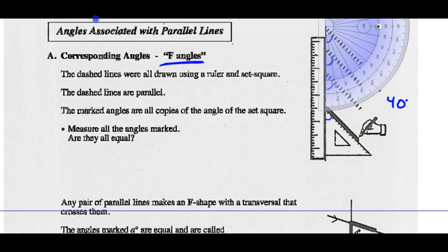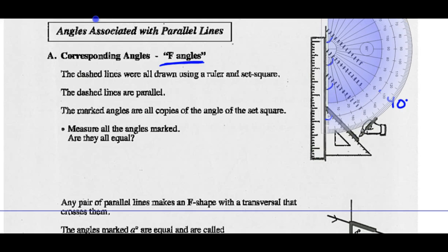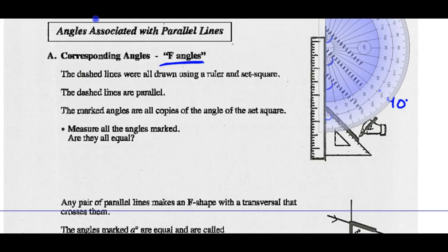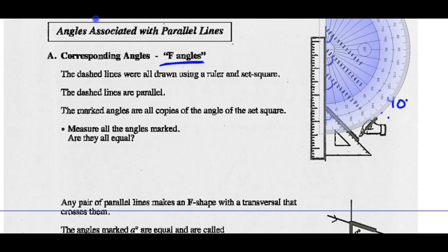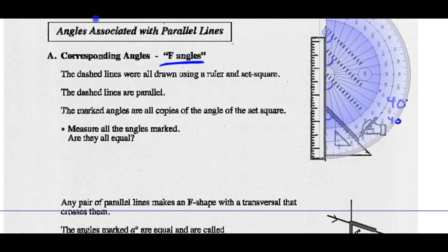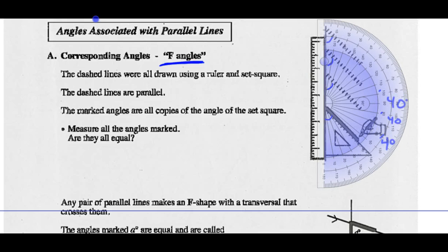Let's try the next one. On the inside of this angle, that looks to be about 40 degrees. Moving down to this one, on the inside of that angle it also looks to be about 40 degrees. And the set square itself also seems to be roughly 40 degrees. So they should all be the same — I'm going to say they're all about 40 degrees.